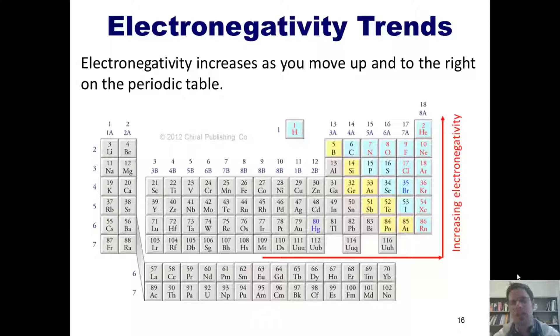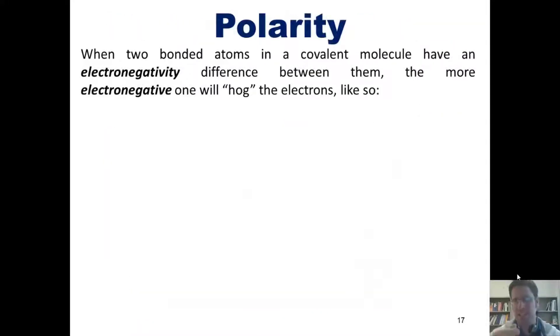Thus, the most electronegative element on the periodic table is fluorine, number 9, and the least electronegative is francium, number 87. This leads beautifully into talking about this very important subject, polarity.